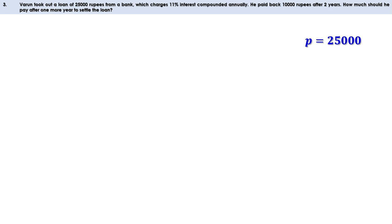P is 25,000. Rate of interest is 11%, that is R is 11%. He paid back 10,000 rupees after 2 years, so let us find the amount after 2 years.